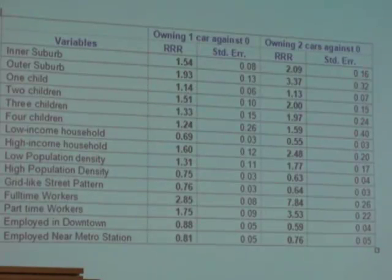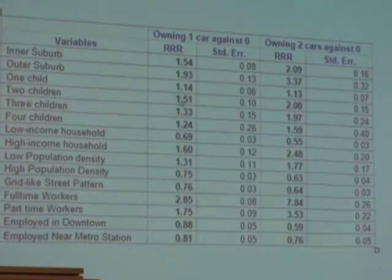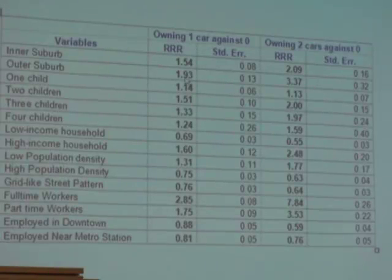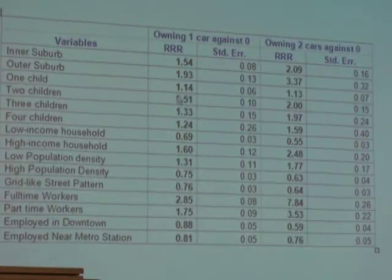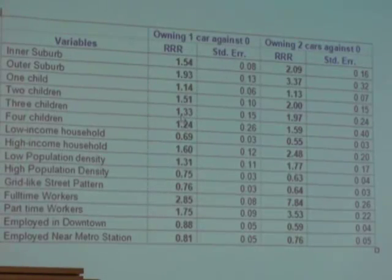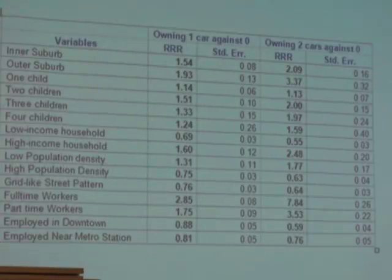If we look at the number of children, a household with one child has odds of owning one car that are 14% higher than a household with no child. A household with two children has odds 51% higher than a household with no children. You see that odds increase with two children, but not as much for three or four children — likely because there are fewer such households in the dataset. There is definitely an increase in the odds with an increase in the number of children.